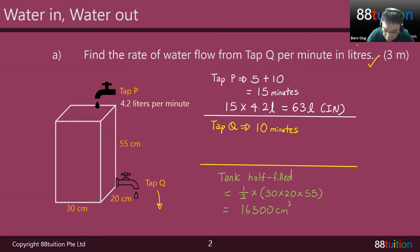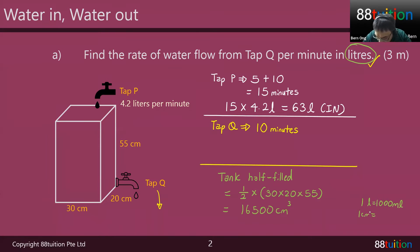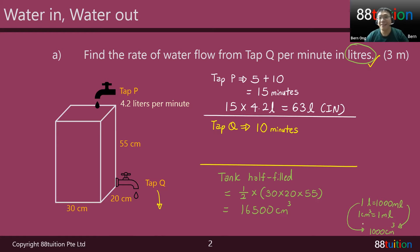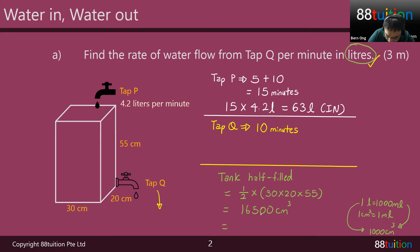It's best to change to liters because the question is asking in liters. We know that 1 liter equals 1,000 milliliters, and 1 cm³ equals 1 milliliter. So 1,000 mL equals 1,000 cm³, which means 1 liter equals 1,000 cm³. So 16,500 cm³ divided by 1,000 — moving the decimal 1, 2, 3 — gives you 16.5 liters.